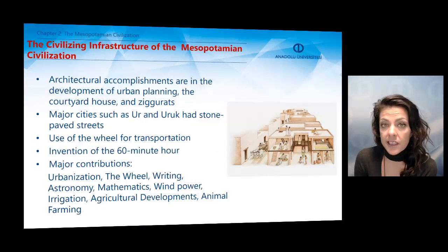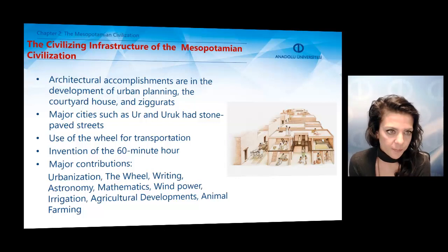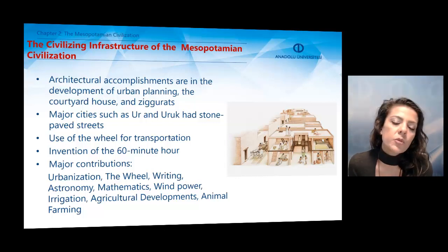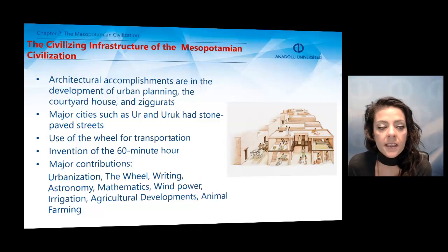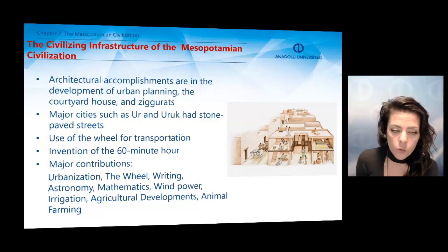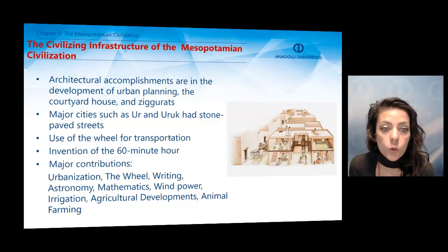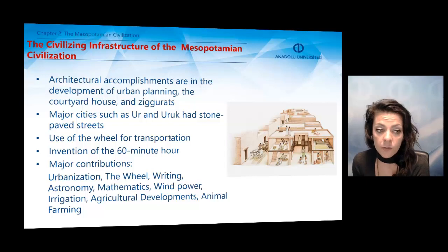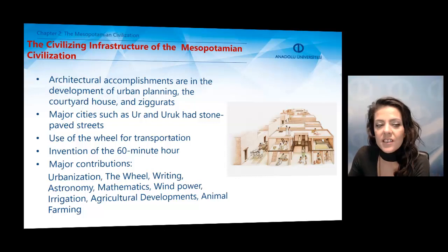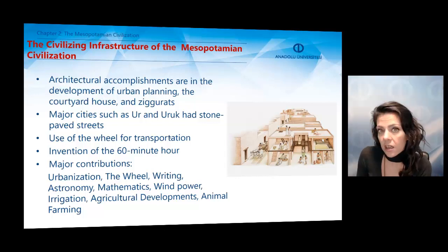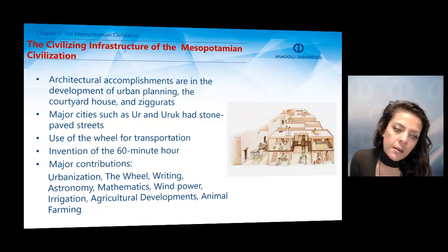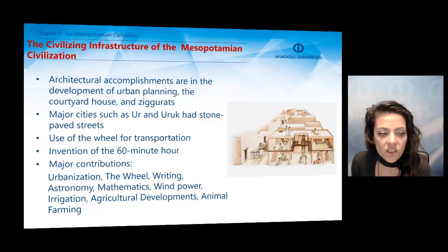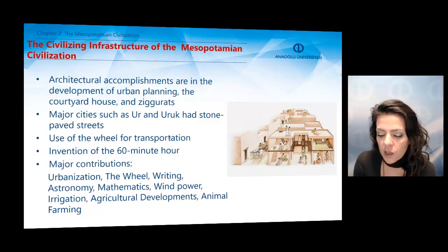Regarding the civilizing infrastructure of the Mesopotamian civilization, architectural accomplishments include the development of urban planning, the courtyard house, and ziggurats. Major cities such as Ur and Uruk had stone-paved streets. They used wheels for transportation and invented the 60-minute hour. The basic major contributions of the Mesopotamian civilization to world civilization include organization, the wheel, writing, astronomy, mathematics, wind power, irrigation, agricultural development, and animal farming.